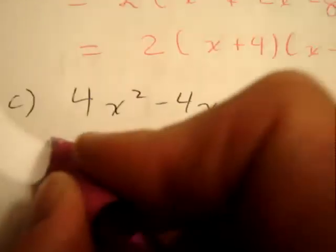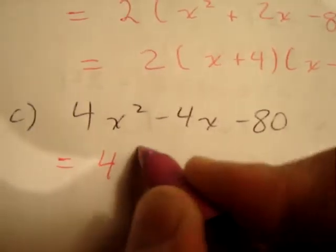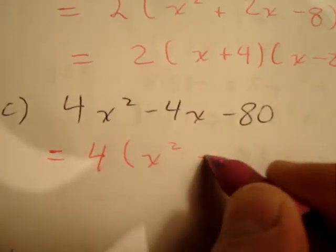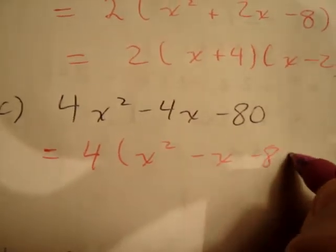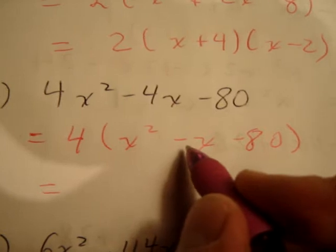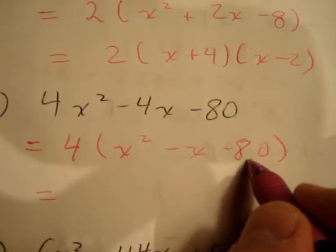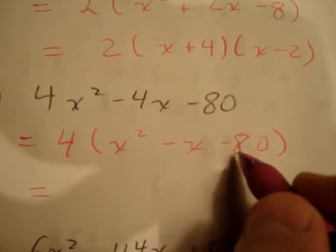Our next question: 4x² - 4x - 80. Factor out the 4, and we're left with x² - x - 80 inside the bracket. We want two numbers that add to -1 and multiply to -80.